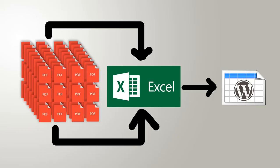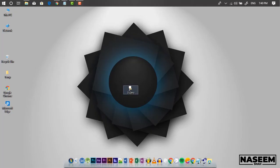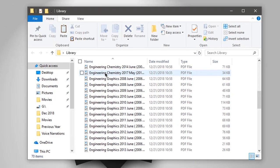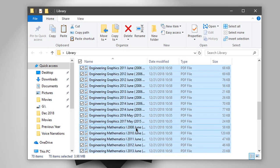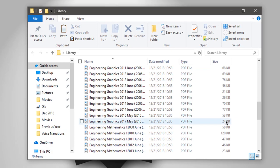If you have loads of files to upload and add to the table, doing it manually row by row would be a big task and take a lot of time. To automate this, we use a spreadsheet — you can create the table in Excel and export it so you can import it into the TablePress plugin. We start by collecting every document into one folder. I have all 70 PDFs in one folder.